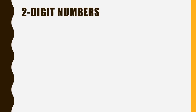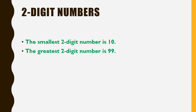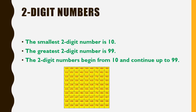2-digit numbers: the smallest 2-digit number is 10 and the greatest 2-digit number is 99. As you can see in the picture, the 2-digit numbers begin from 10 and continue up to 99.